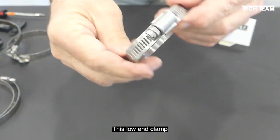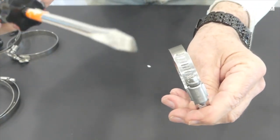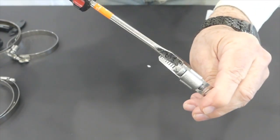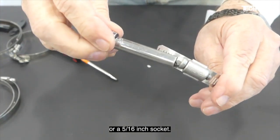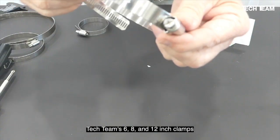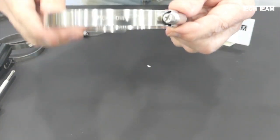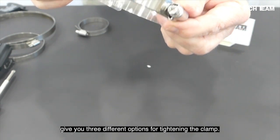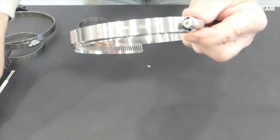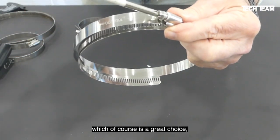This low-end clamp can only be tightened by using a slot-style screwdriver or a 5/16 inch socket. Tech Team 6, 8, and 12 inch clamps give you three different options for tightening the clamp. You can use a number two Phillips screwdriver, which of course is a great choice.